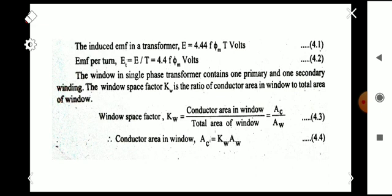We are starting with the EMF induced in transformers that we have already learned. The EMF induced in a transformer is equal to 4.44 f Φm T volts, where f is the frequency, Φm is the flux, and T is the number of turns. From this equation we can find the EMF per turn, that is E_T = E/T = 4.44 f Φm.